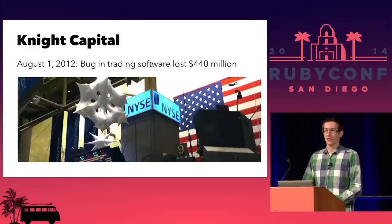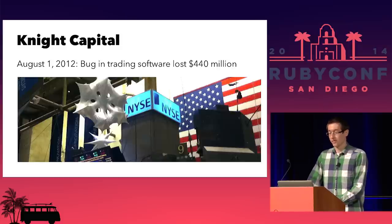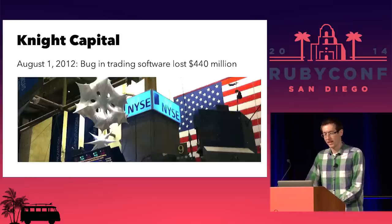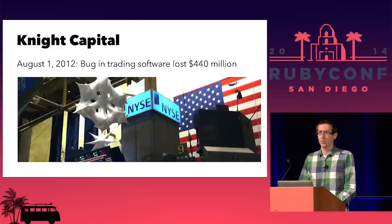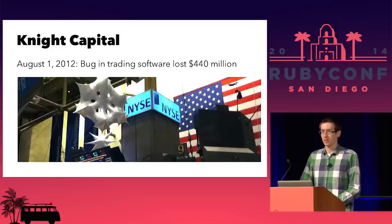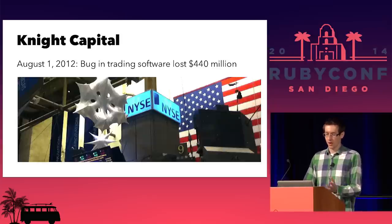And then just a few years ago, Knight Capital had a bug in their trading platform. Within 45 minutes, they lost $440 million. There was a bad deployment and some deprecated code that wasn't supposed to be there that interacted in a weird way — this bug just lost money as fast as possible. You put a bad bug out and you can cause a company to collapse. So bugs are a problem.